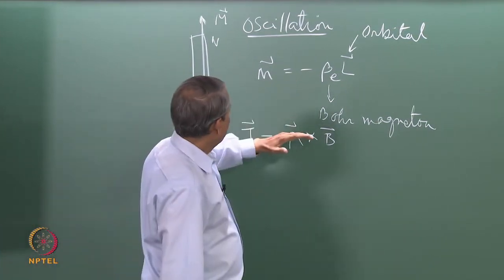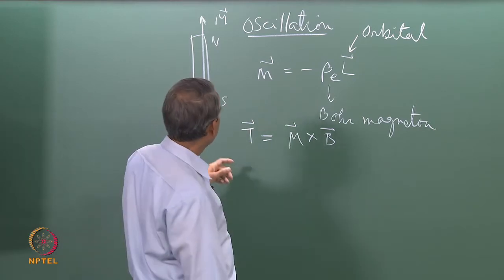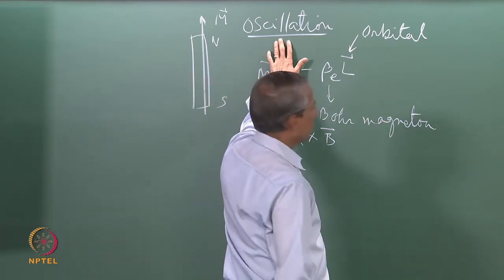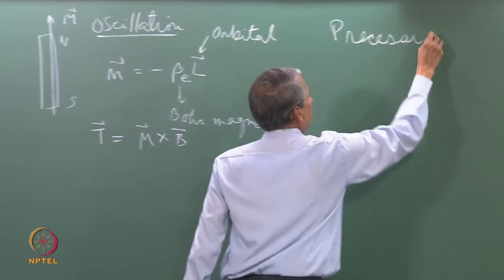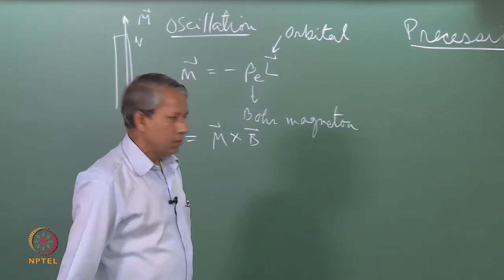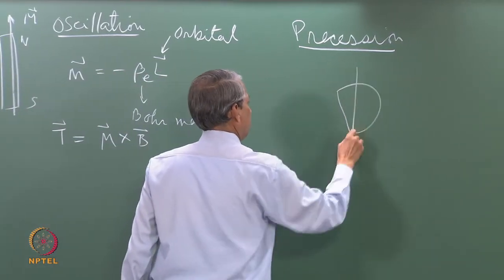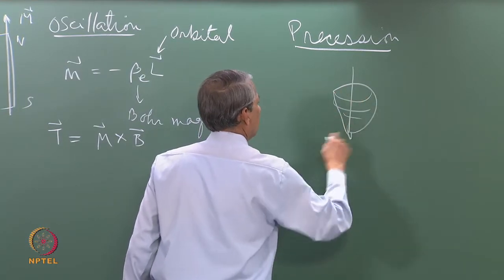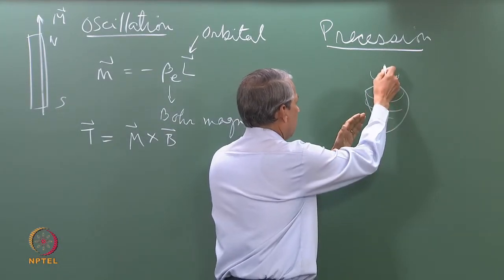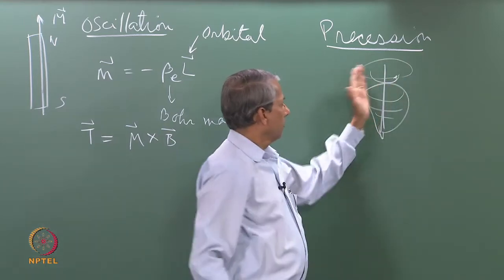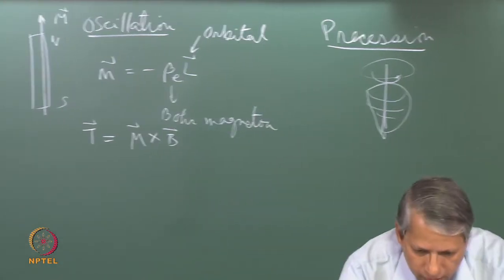Now, if a magnetic moment arises from its angular momentum, what is going to happen? In that case it is not undergoing oscillation — it will undergo a special kind of motion, what we call precession. What is precession? All of you must have noticed that when you play with a top spinning at high speed, the axis of its rotation also keeps moving. That type of motion is called precession. Let us try to understand this in a little more detail.